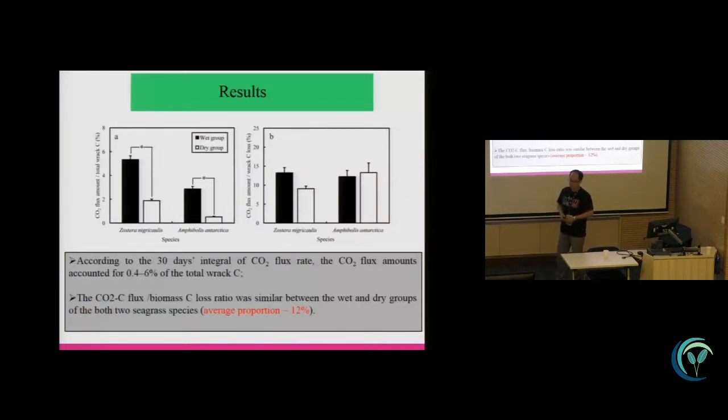And this is for the CO2 ratio of the CO2 flux amount to the total wrack carbon, and also to the ratio of the wrack carbon loss. You can see that also in the wet condition, both species also show higher ratio of the CO2 flux to the biomass wrack. But there is no difference for the CO2 flux amount to the wrack carbon losses.